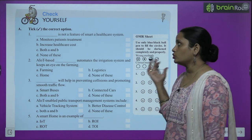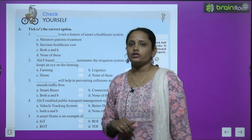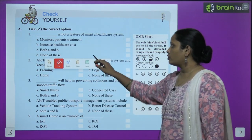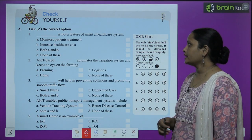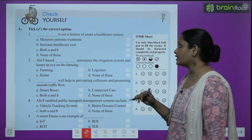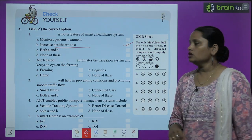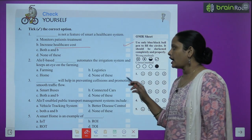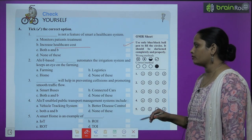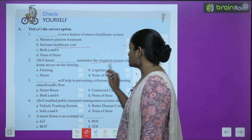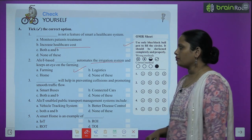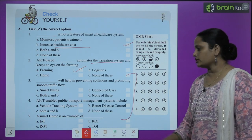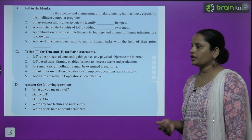Now let's move on to book exercise — Check Yourself। First question: which is not a feature of smart healthcare system? Answer: increased health costs — smart features में health costs increase नहीं होती। Next: AIoT-based dash automates the irrigation system and keeps an eye on the farming — answer is farming। So AIoT-based farming automates the irrigation system। Like this children, you have to complete the rest of the questions given here।